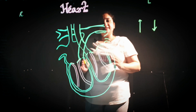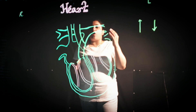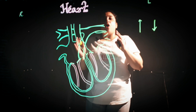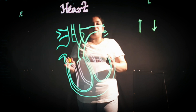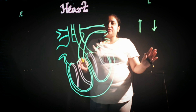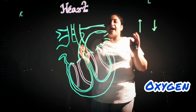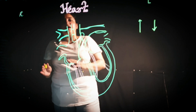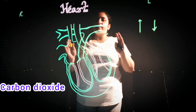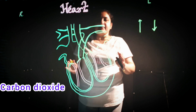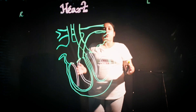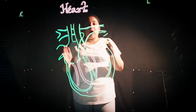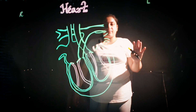The heart handles oxygenated blood and deoxygenated blood. Oxygenated blood consists of oxygen, and deoxygenated blood carries carbon dioxide away from the body. Let's see the working of the heart through the diagram.